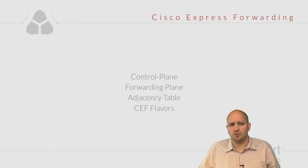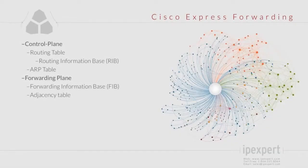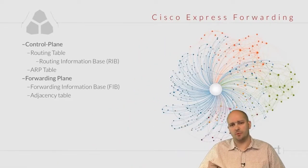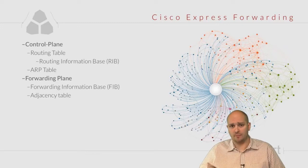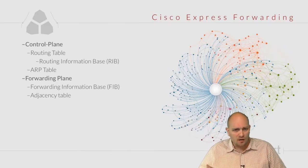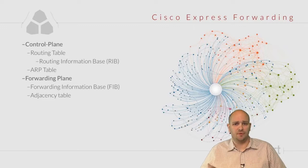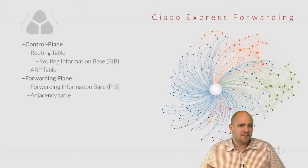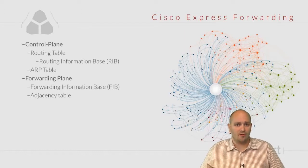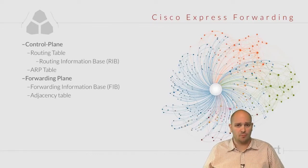One of the most important concepts when understanding Cisco Express Forwarding is the separation it creates between the control plane and the forwarding plane on the device. If you're unfamiliar with these terms, start getting familiar with them, because when you explore concepts like multi-protocol label switching (MPLS) or any modern advanced networking technology, this separation of control and forwarding functions becomes very important.